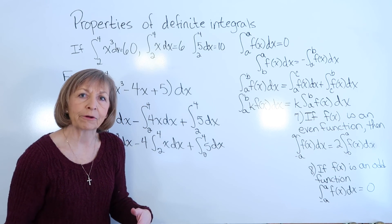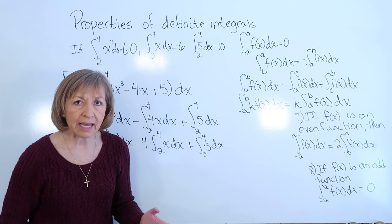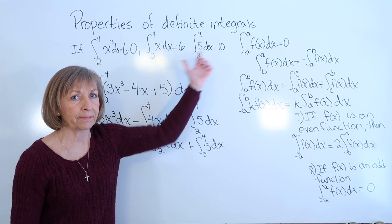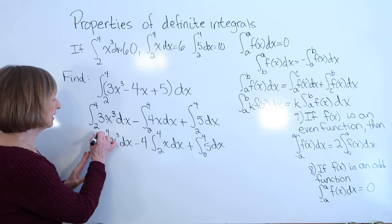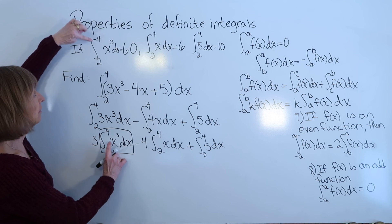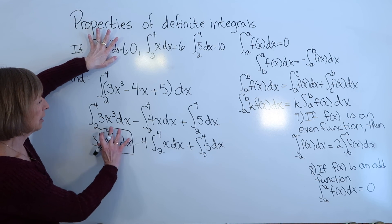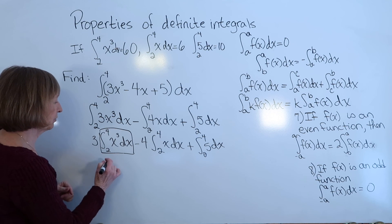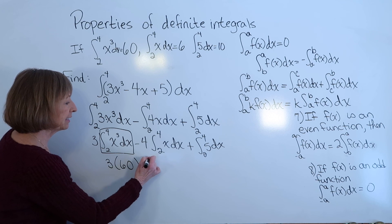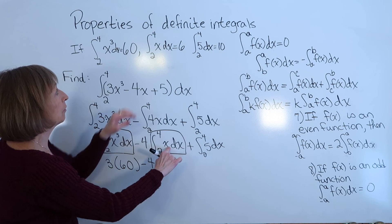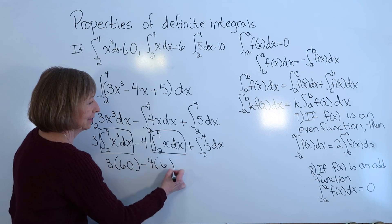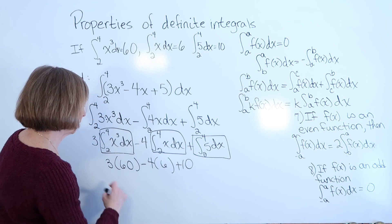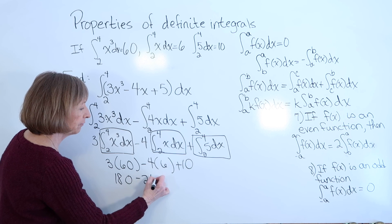For the last term, keep the form as given — the integral of 5 dx from 2 to 4 — since that's the form provided in the setup. Substituting the given values: 3 times 60, minus 4 times 6, plus 10. That gives 180 minus 24 plus 10, which equals 166.